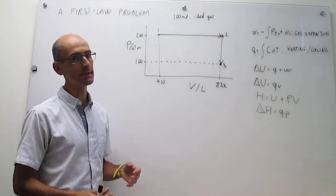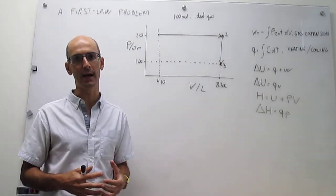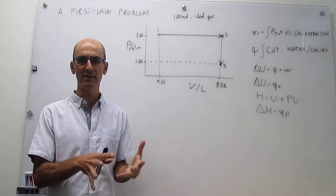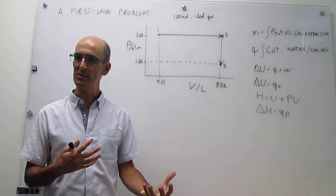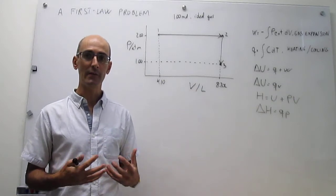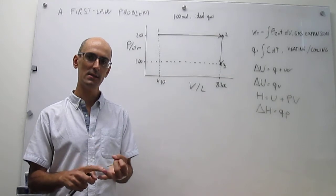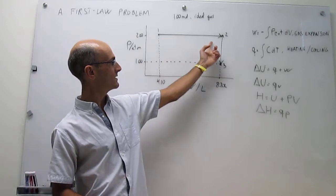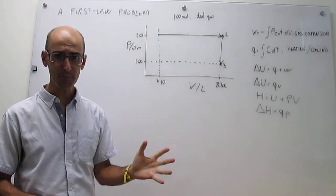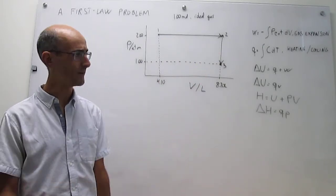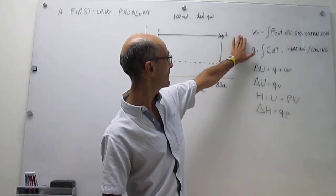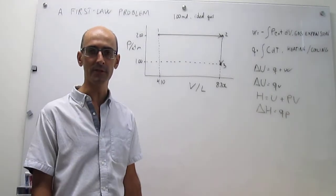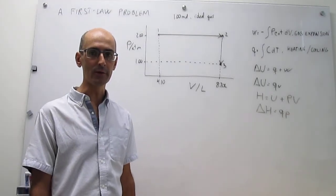What we have here is part of a cycle for an ideal gas. We're simply changing the pressure, changing the volume, and changing the temperature as well. The question is: what is work, heat, changing internal energy, and changing enthalpy in each one of these two steps? We're going to solve all of that simply with the equations we have been discovering throughout our survey of the first law.